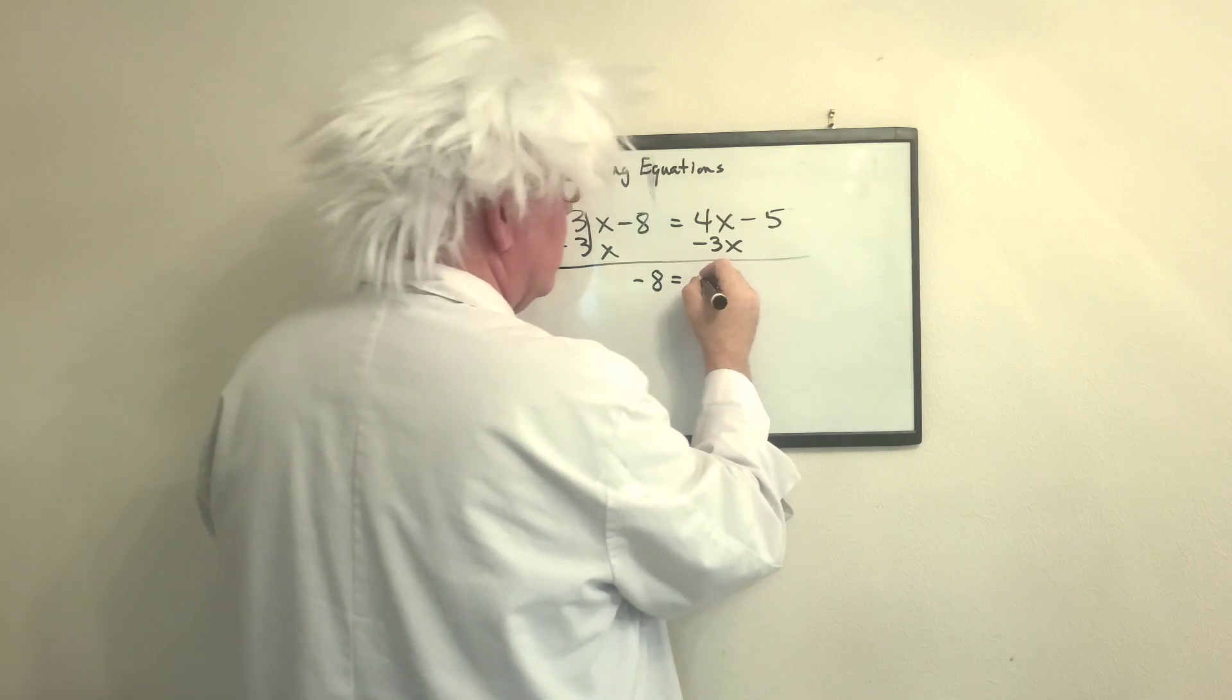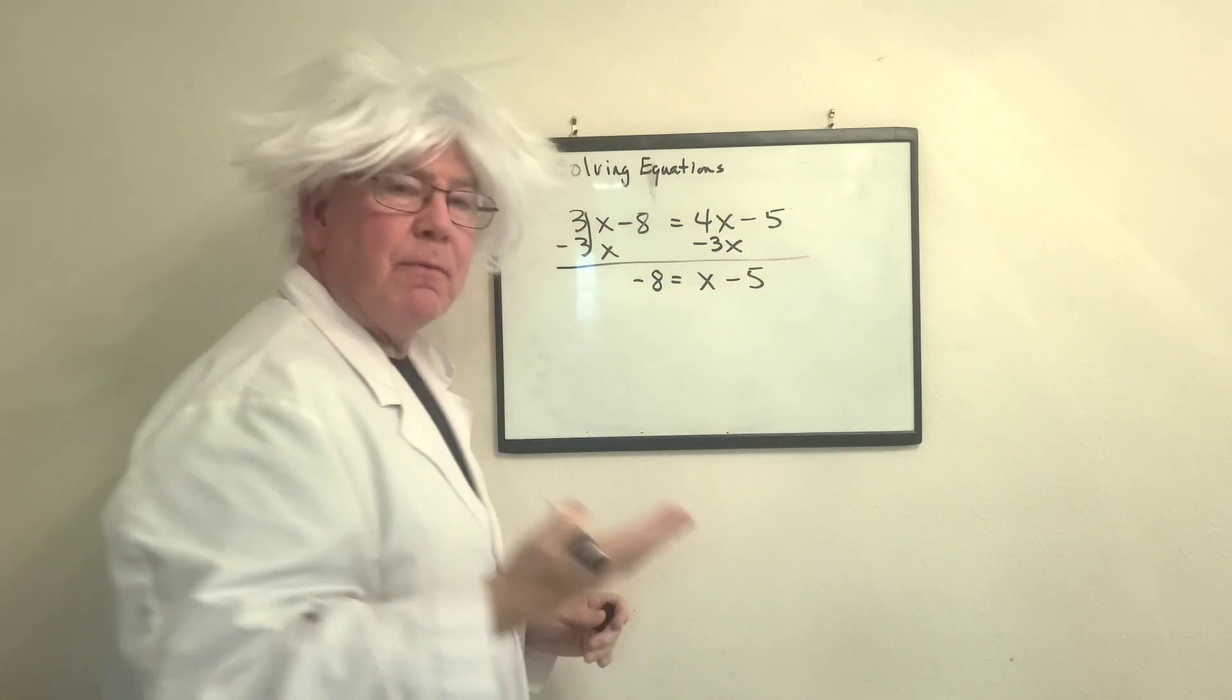So, now 4 minus 3 is 1. 1 times x is x, and I'm left with this problem.